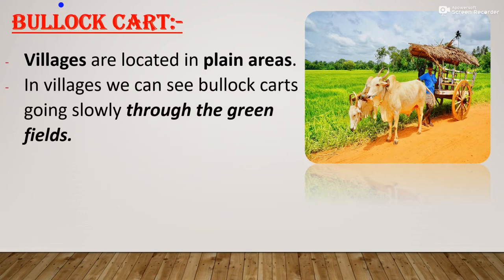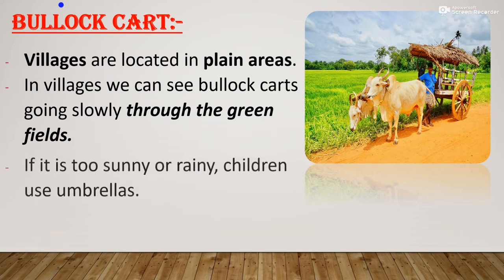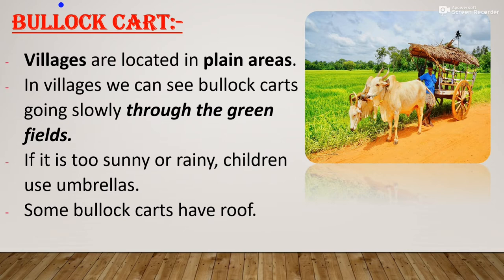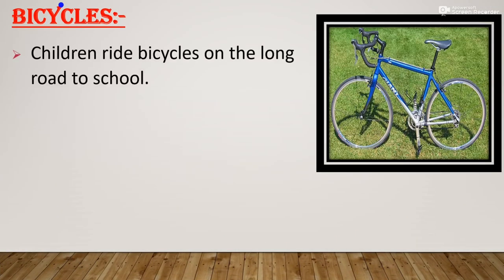Bullock carts are seen in villages located in plain areas. You can see bullock carts going slowly through the green fields. If it is too sunny or rainy, children use umbrellas. Some bullock carts also have a roof made of straw, as you can see in the picture.